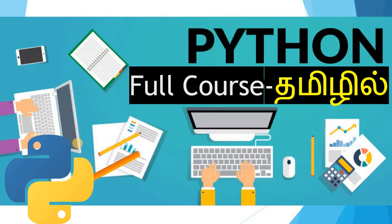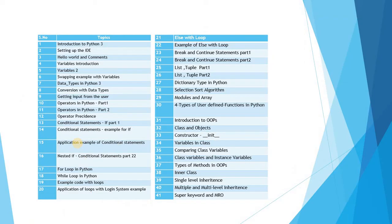Next is the Python course. Python 3 is covered from beginner to advanced. There are 40 lessons in the Python course. Starting from the basics to the end, all basic concepts are covered including OOPs concepts.